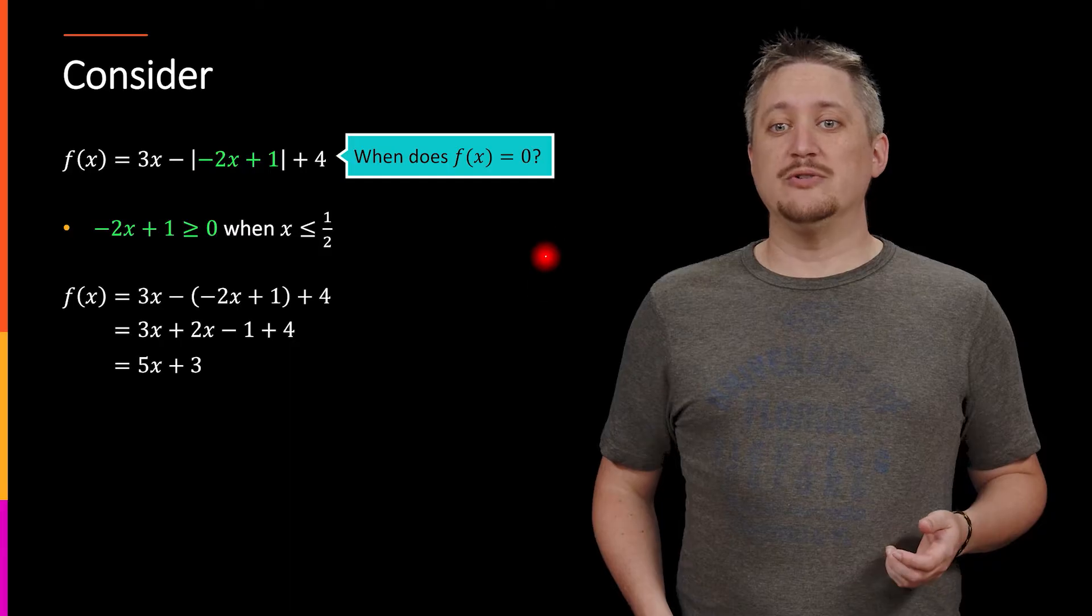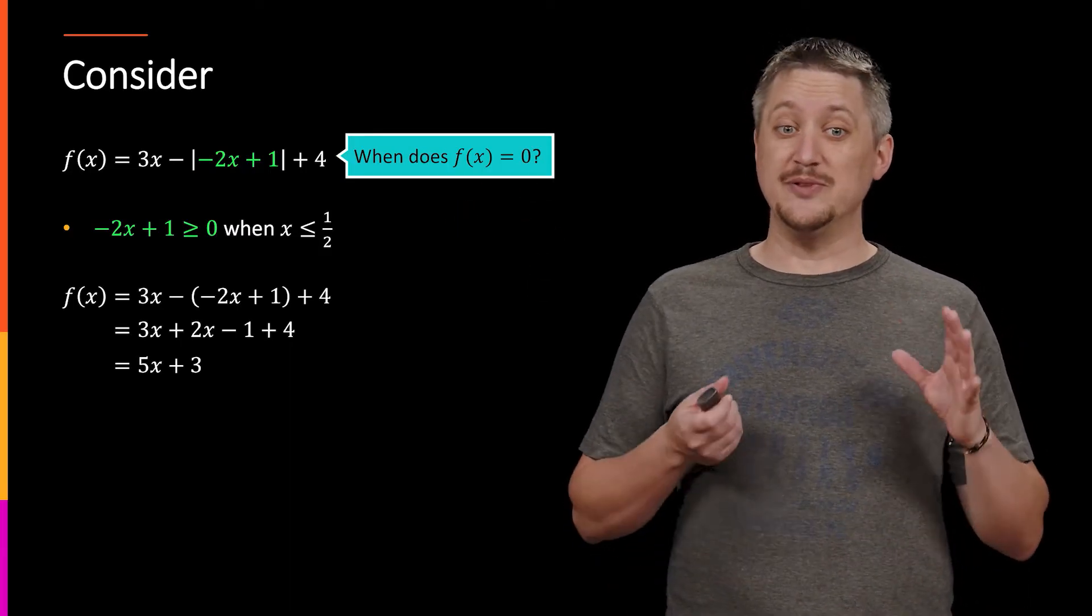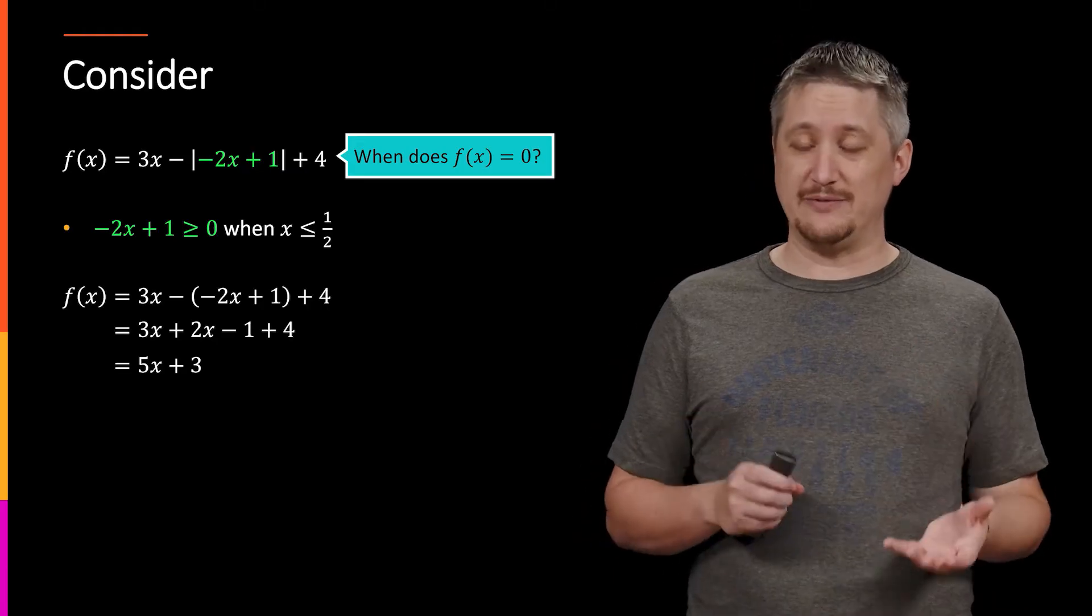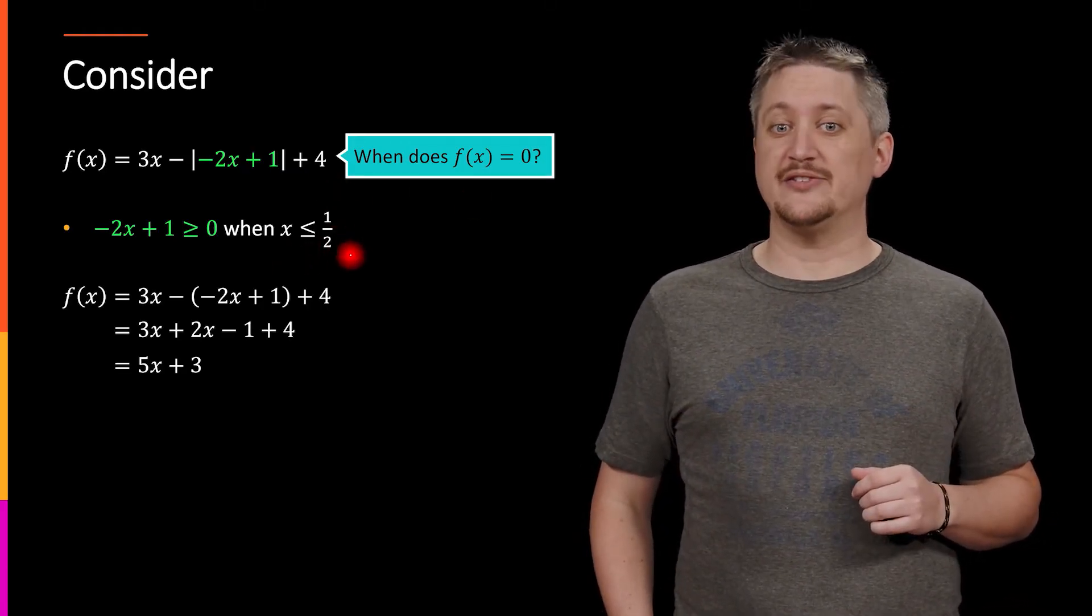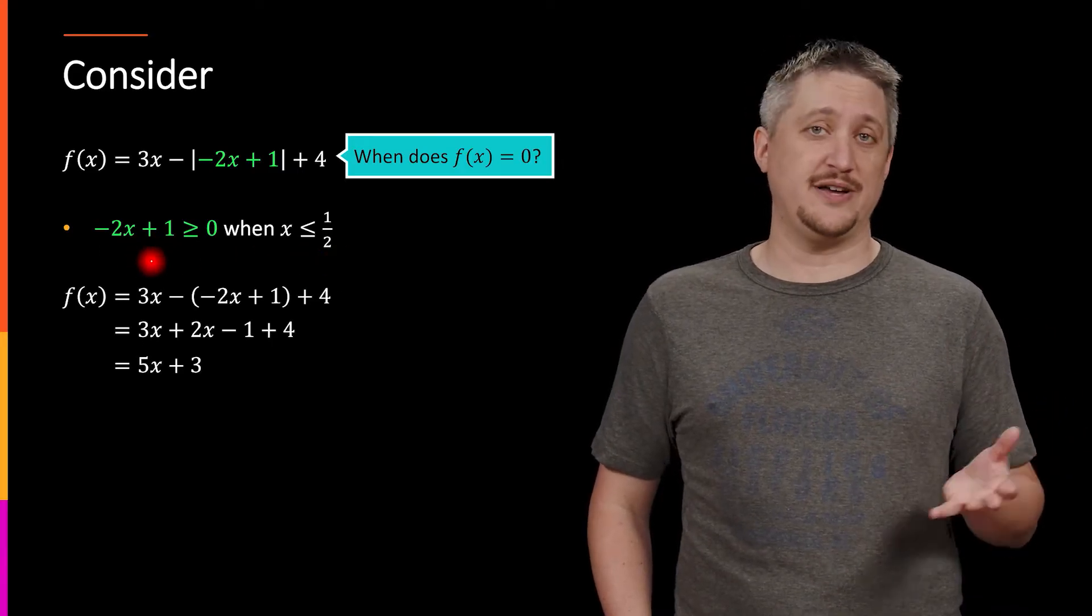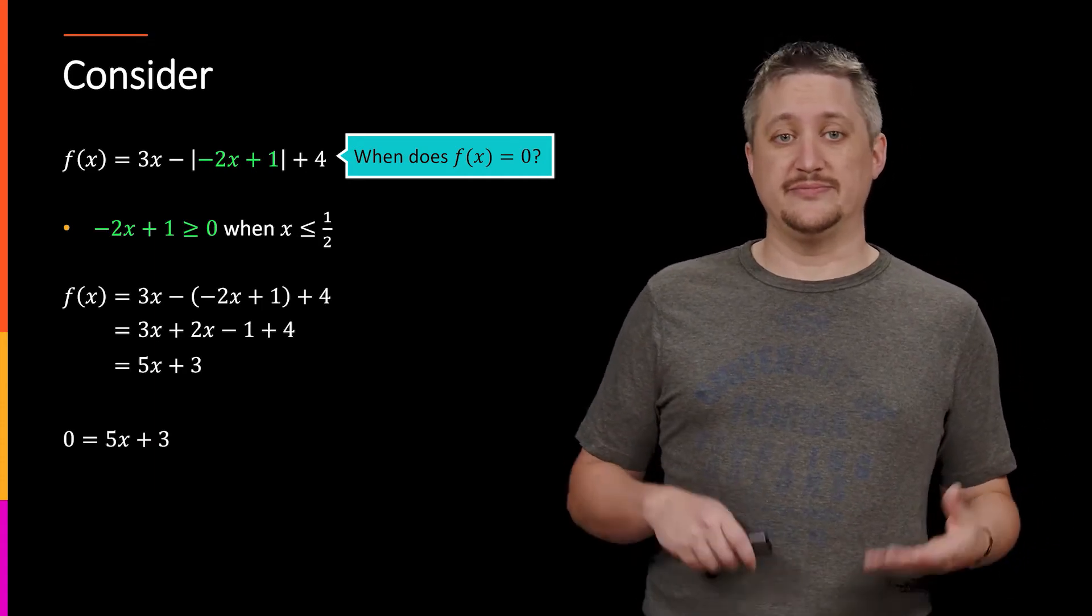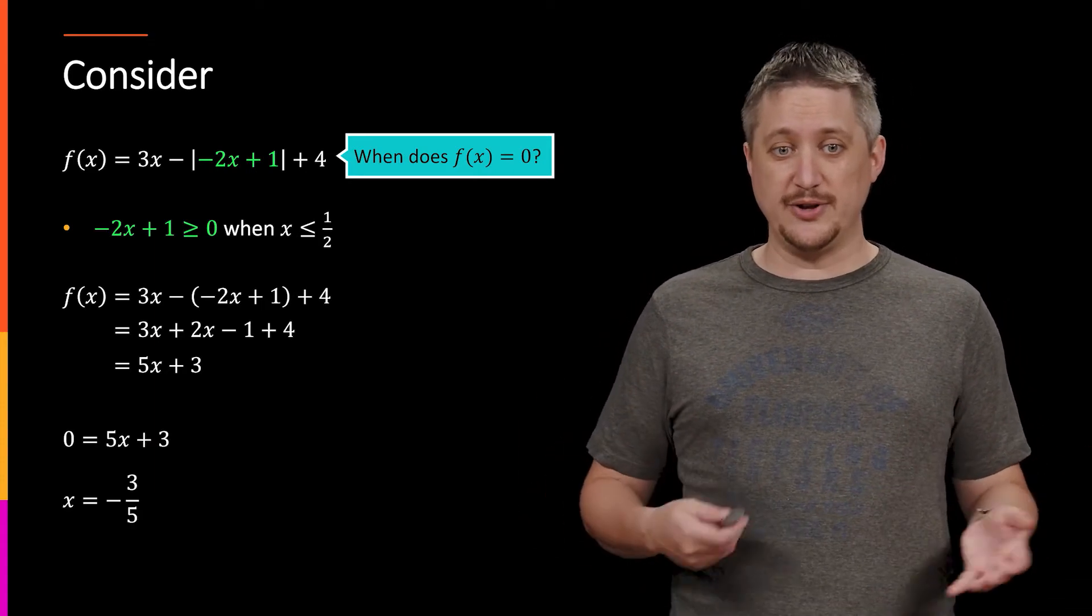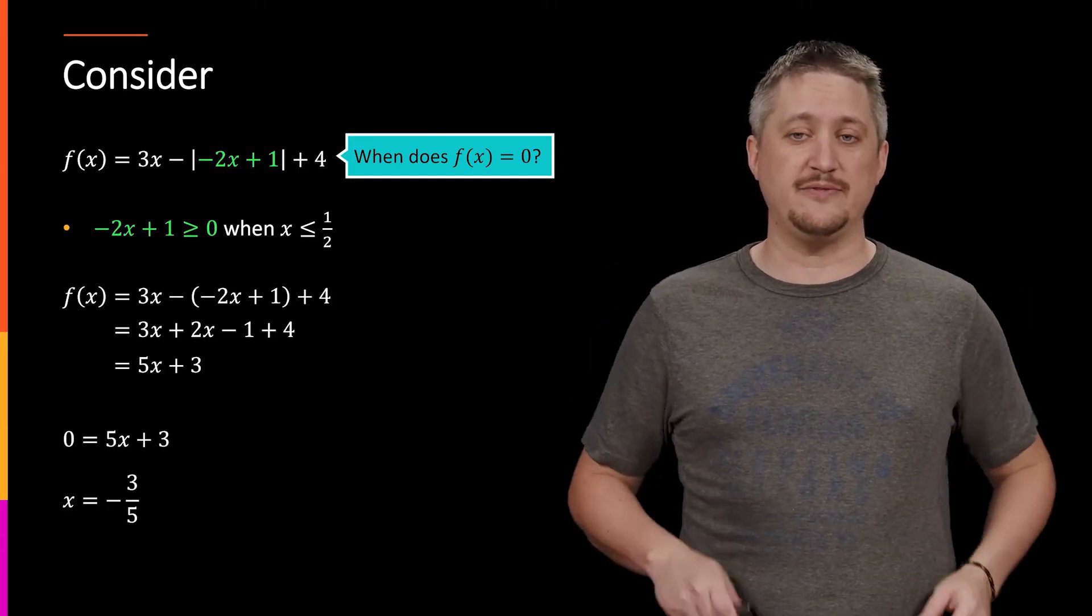Now, again, our goal here is to know when is f(x) zero. So now that we've sort of simplified f(x), we no longer have absolute value because we're saying only consider the situation where x is less than or equal to 1/2, specifically so now we know that the absolute value is not negative. Now, we can actually set this equal to 0 and solve. So setting it equals 0, move the 3 over, divide by 5, we get x is equal to -3/5.